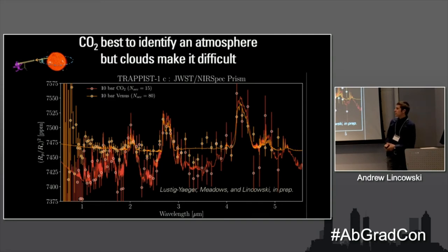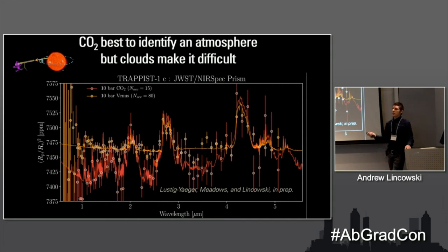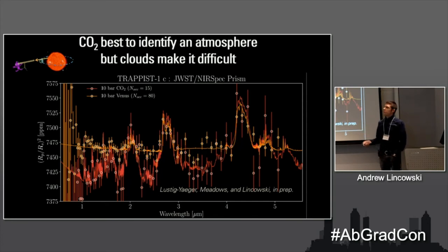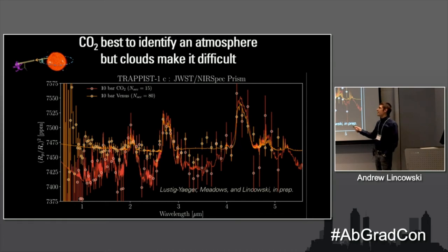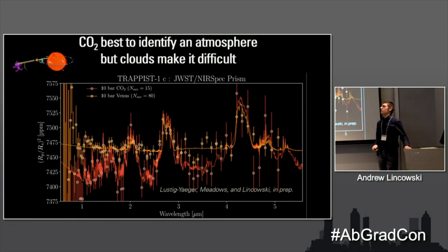Clouds are a serious problem. For TRAPPIST-1c, which can form sulfuric acid clouds, the cloud deck truncates the transmission spectrum right at the top of the cloud, cutting the signal from maybe 200 parts per million down to half that. The number of transits required to reach a signal-to-noise of 5 or 10 goes up significantly — for a Venus-like atmosphere with clouds on TRAPPIST-1c, you'd need up to 80 transits. I don't think James Webb time allocation committees will ever approve 80 transits of 100-200 hours on such an expensive telescope competing with other science.